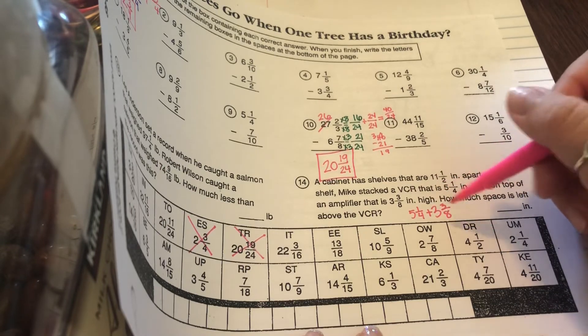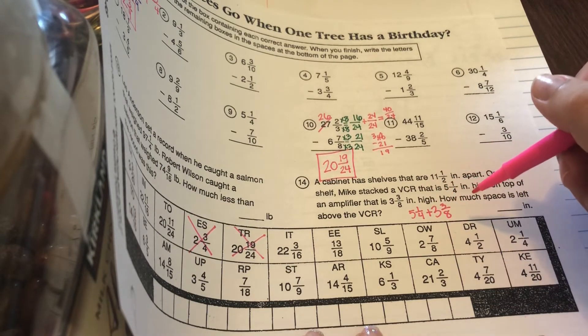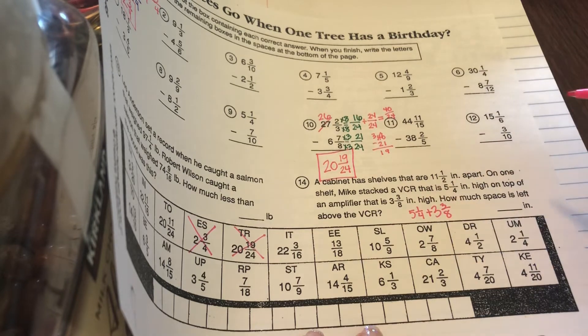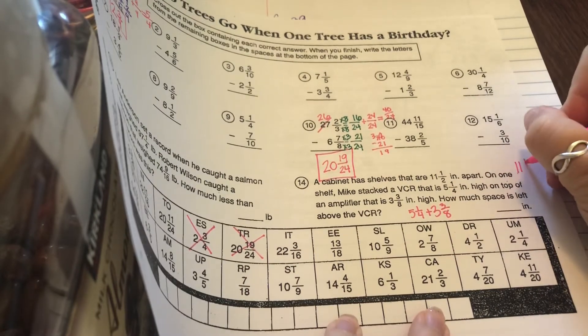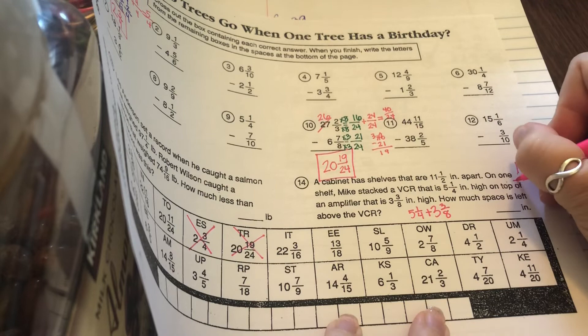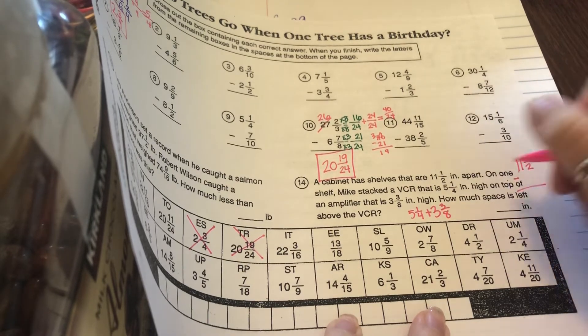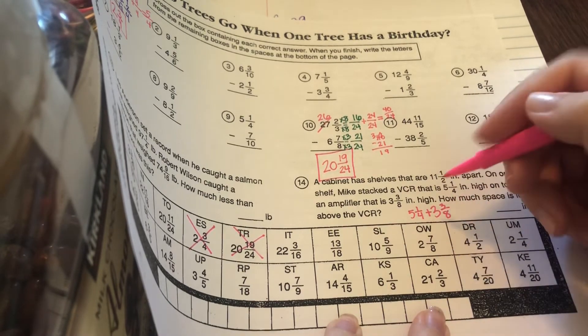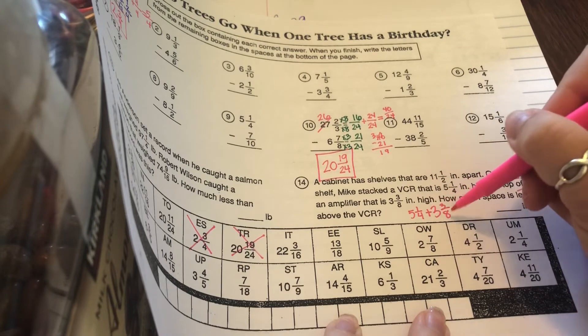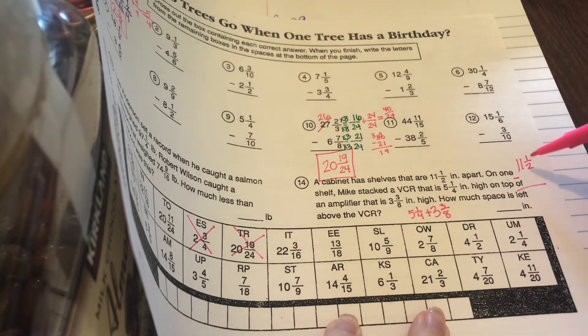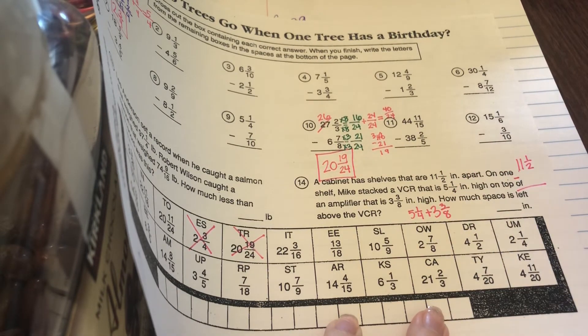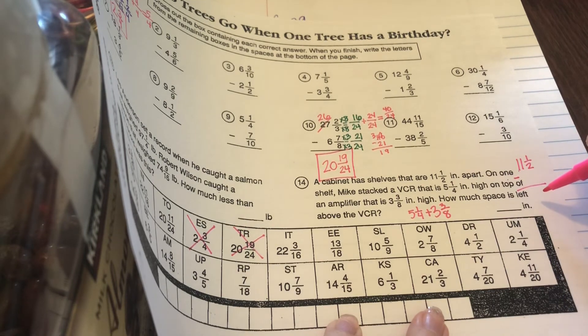Then, whatever you get for that answer on a separate sheet of paper, because there's no place to show your work here, you're going to take how far apart the shelves were and subtract that answer that you got right here. When you added 5 1⁄4 plus 3 3⁄8, you're going to subtract that from 11 1⁄2. So, this is a two-step problem, and then that will give you your final answer of how much space is left.